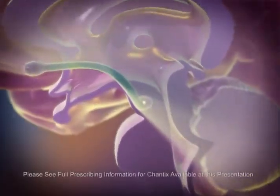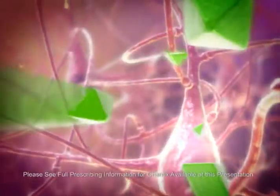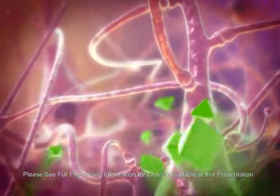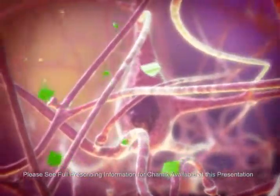Focusing in on the ventral tegmental area, we observe Chantix, varenicline, binding to the alpha-4-beta-2 nicotinic acetylcholine receptor on the nerve cell surface.